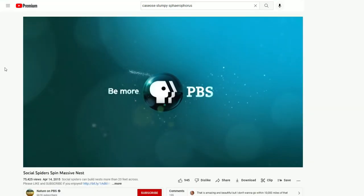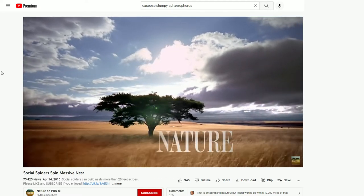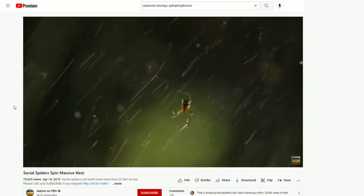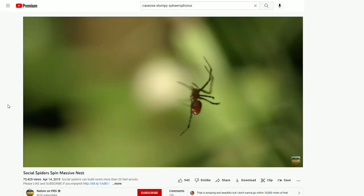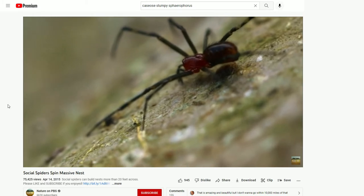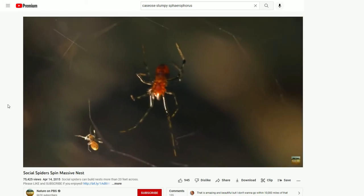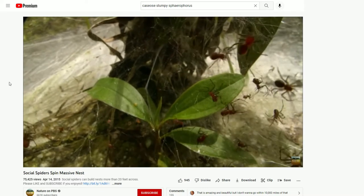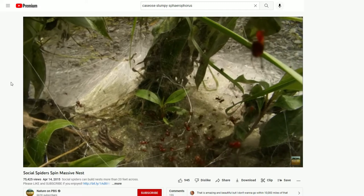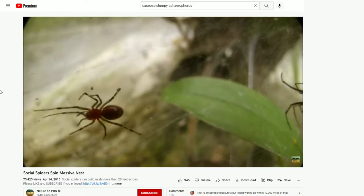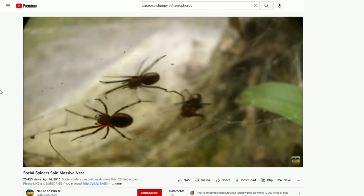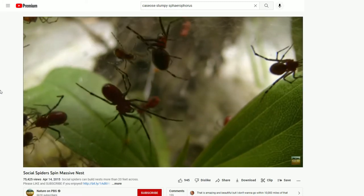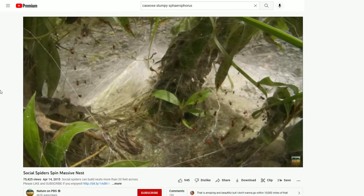First hit is social spiders spin massive nest. 75,000 views, seven years old, nature on PBS. Let's take a look and see what this is all about. I love nature shows. We got some spiders here. They look kind of small. Most spiders are not what you'd call sociable. They're usually downright hostile toward their own kind, kind of like us.